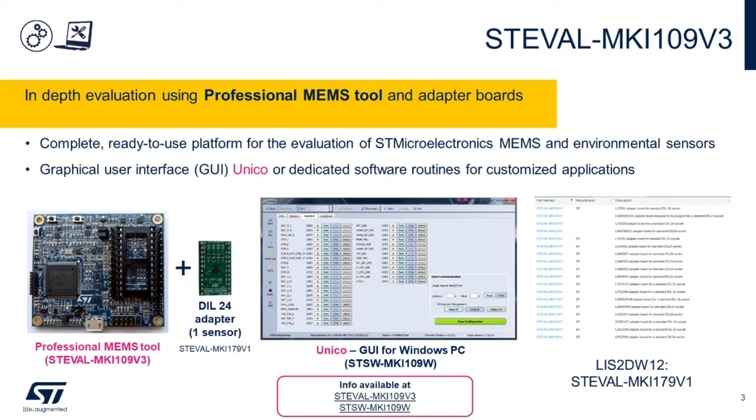This includes interrupts, pedometer, finite state machines, and also the machine learning core on our high-end IMUs. It is also a very powerful tool that allows you to perform data logging and data visualization with just a couple of clicks. The Unico GUI is available on Windows, Mac and Linux and can be downloaded directly from st.com.